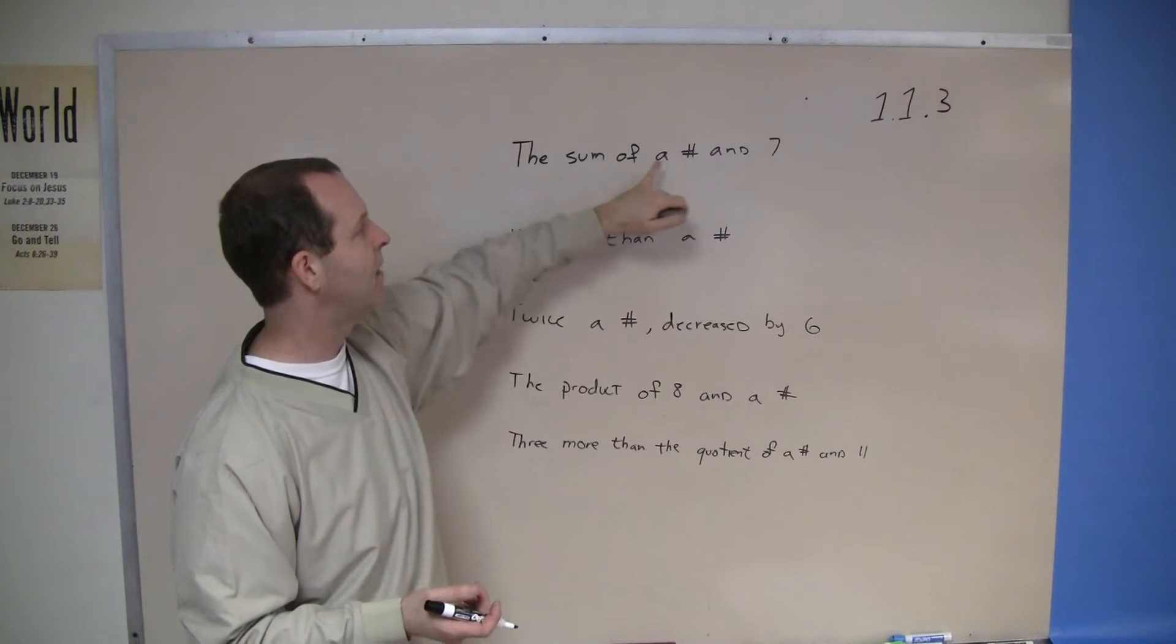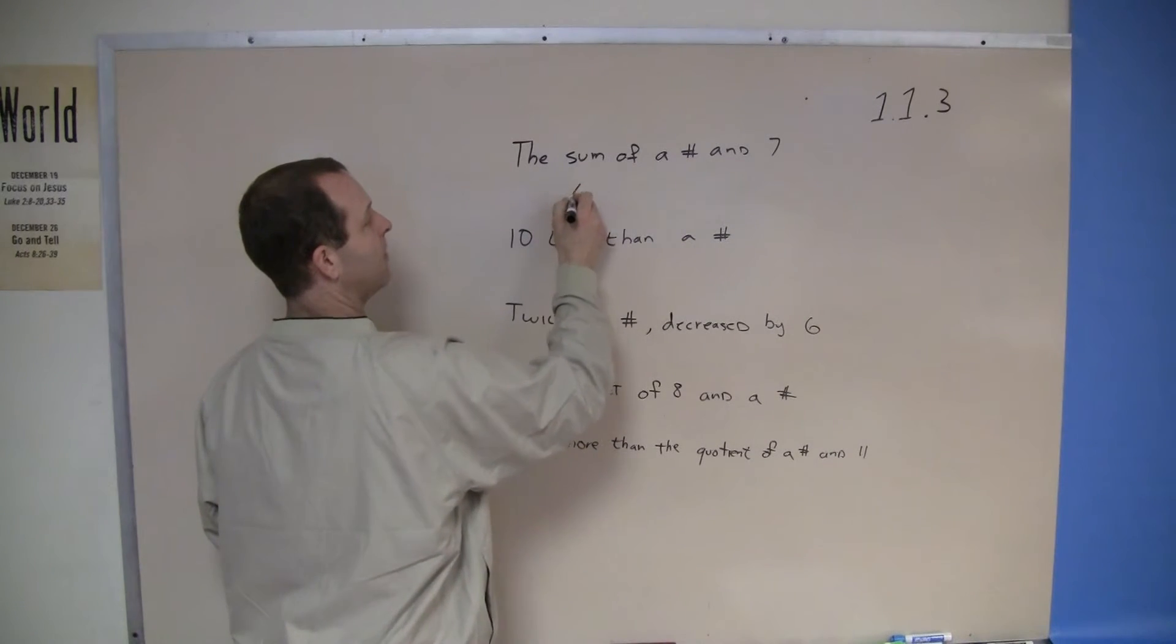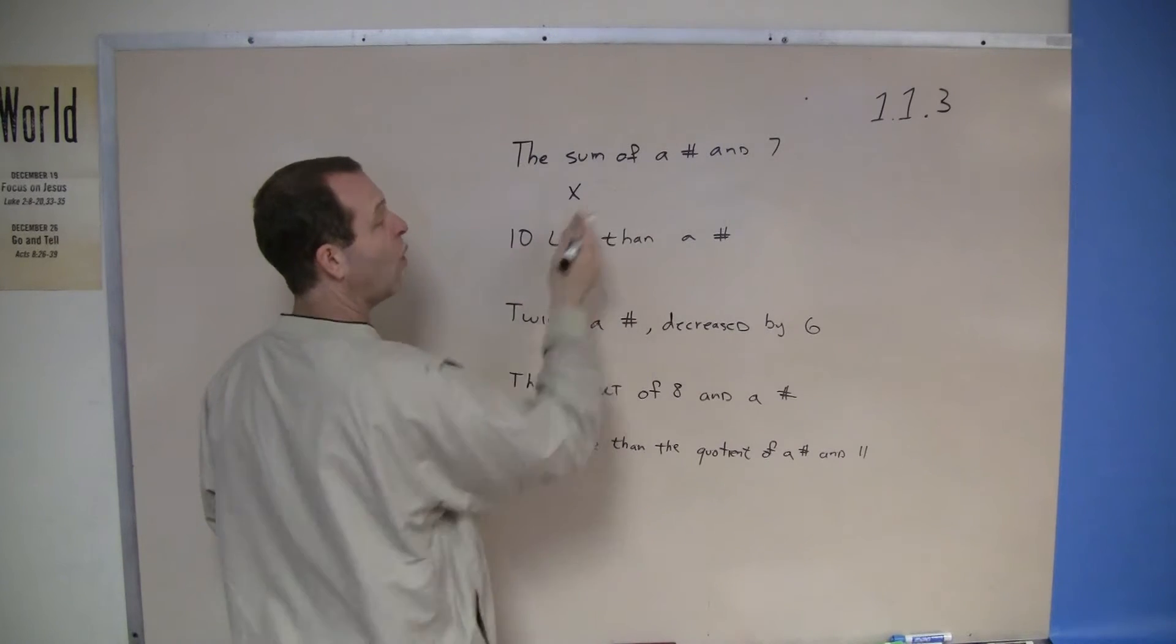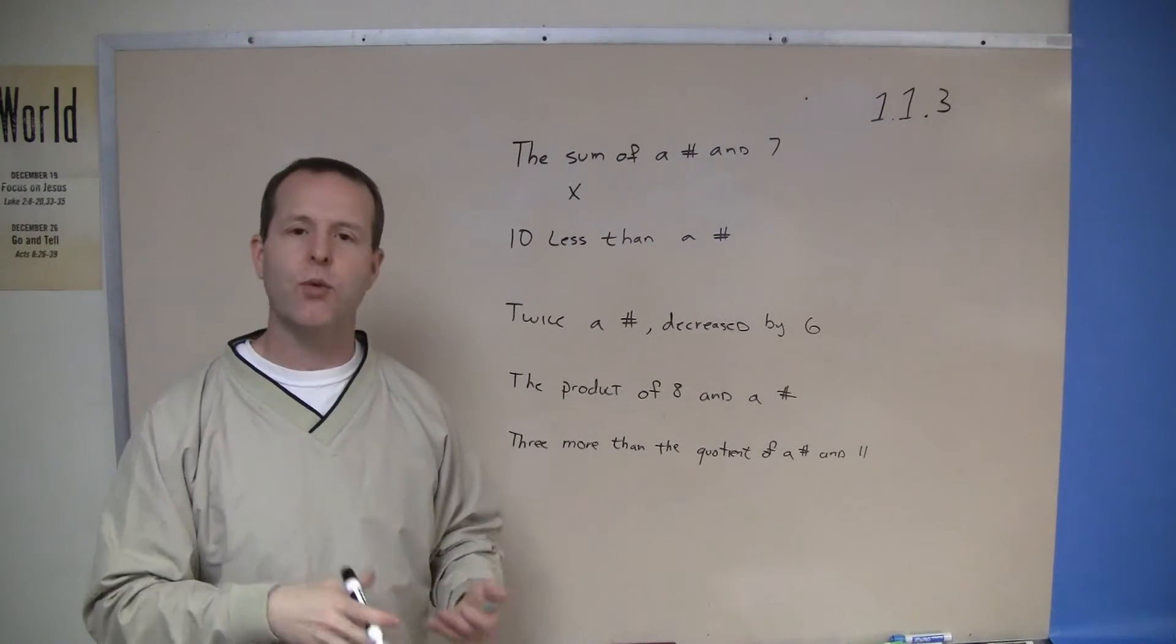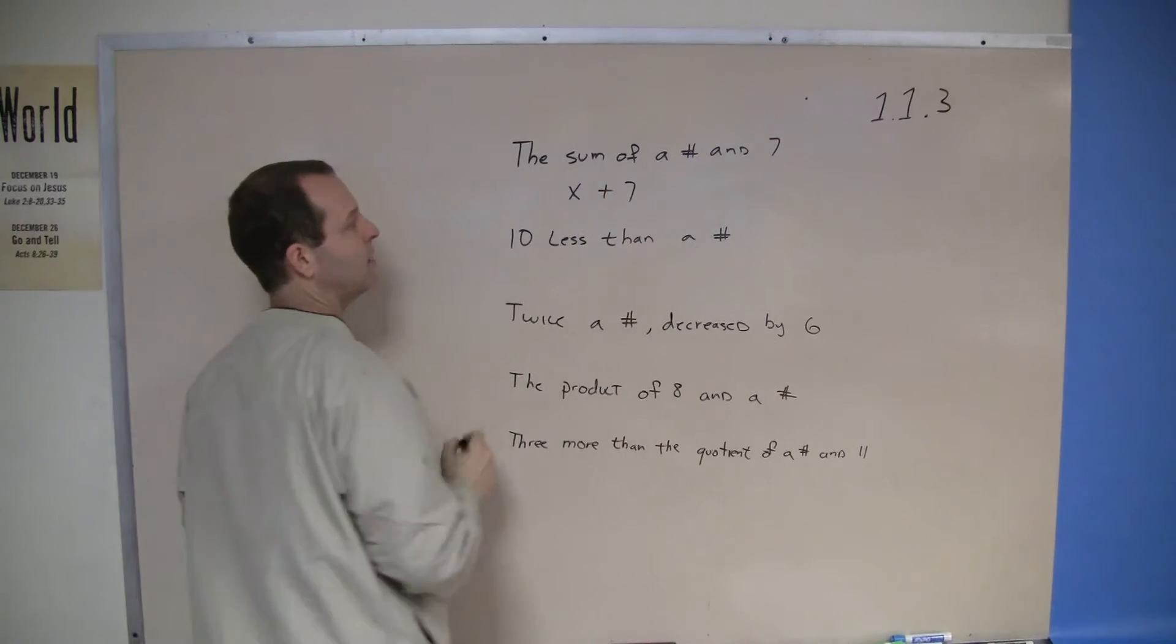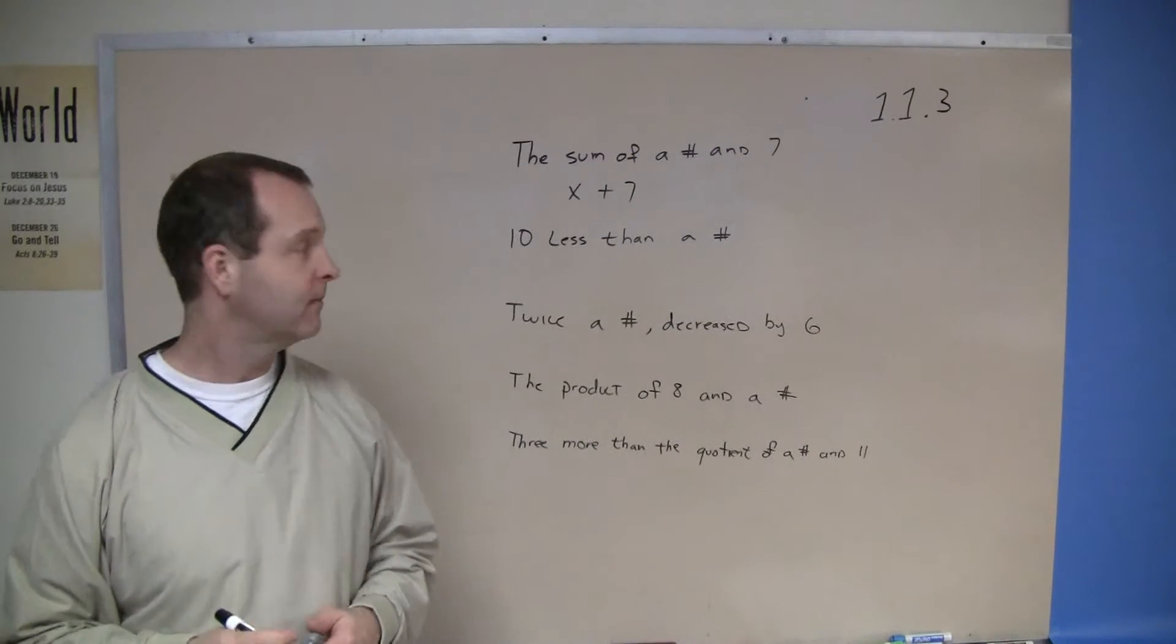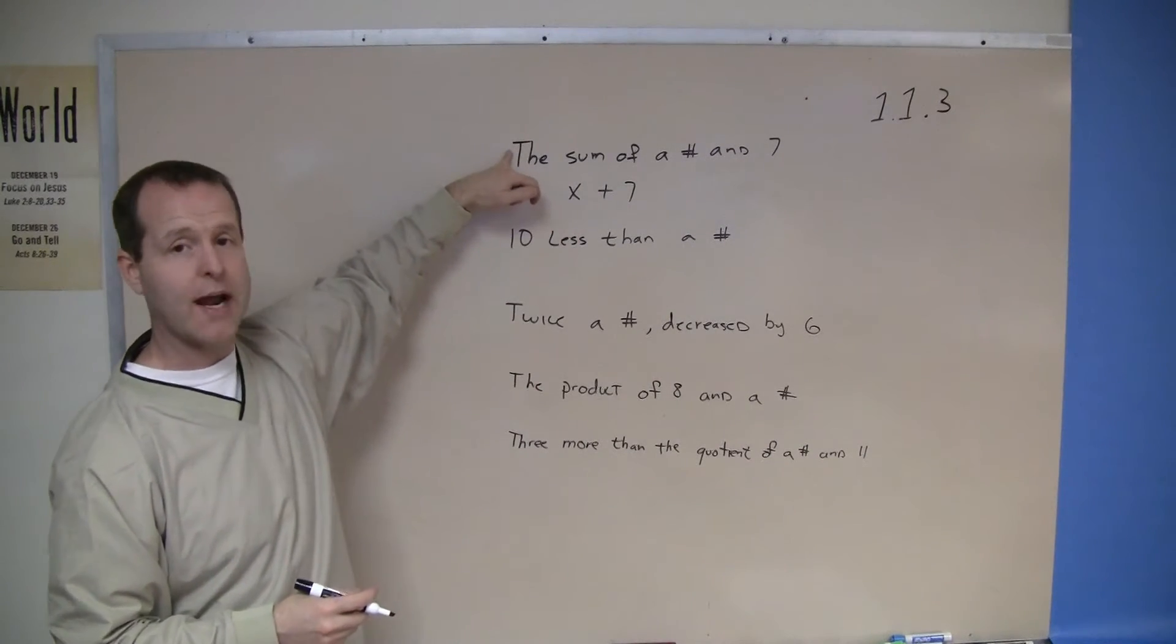So what it's asking me is, what's the addition of some number and seven? Some number in this case is an x or whatever variable you choose - it could be any letter, but traditionally we just choose x in our examples. So that statement, x plus seven, means exactly the same thing as this phrase right above it.